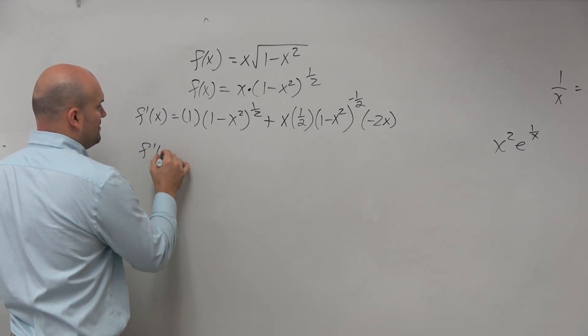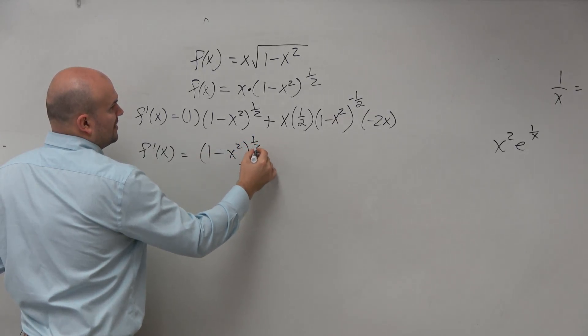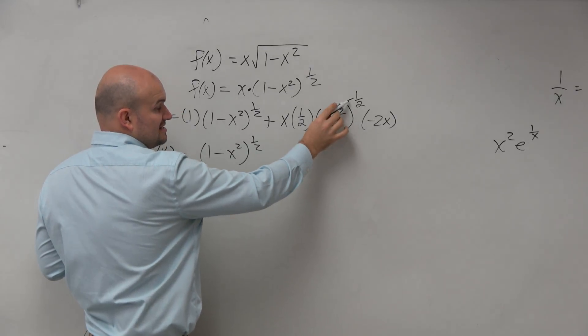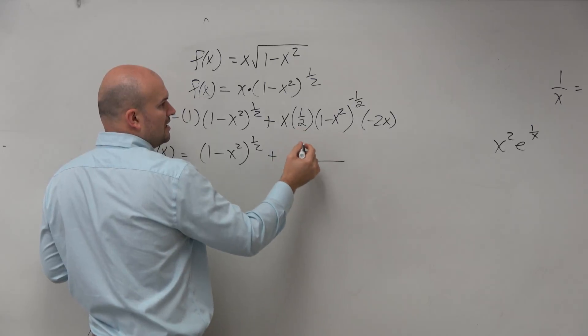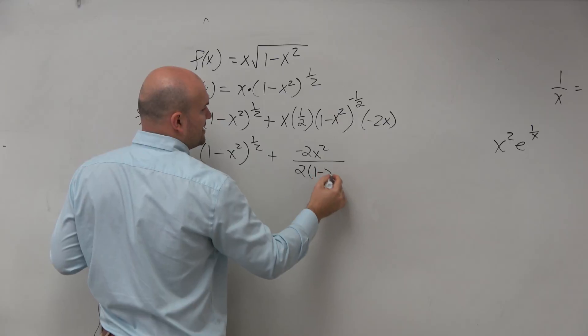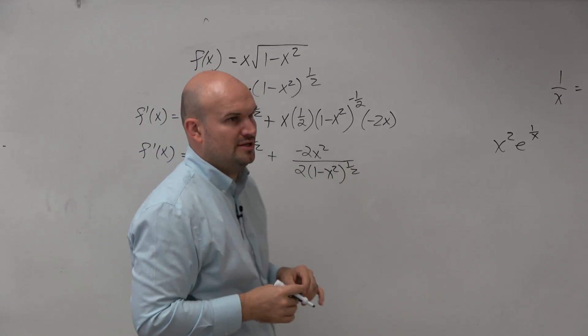So we'd have f prime of x is just going to equal 1 minus x squared raised to the 1 half. Over here, we're going to have this as a negative power, so that's going to be in the denominator. We have x times x, so this is negative 2x squared over 2 times 1 minus x squared raised to the now positive 1 half, because I put it in the denominator.